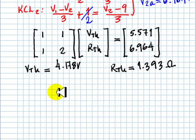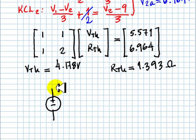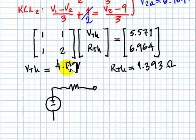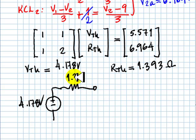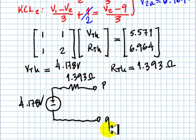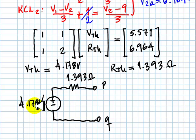To finish the exercise, we make the drawing of the Thevenin circuit, without which the exercise is not complete. The Thevenin voltage V7A is always drawn right side up, with a positive or negative value depending on the result: 4.178 volts. And R7A is 1.393 ohms.